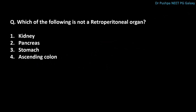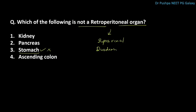Which of the following is not a retroperitoneal organ? The correct answer is the stomach. Retroperitoneal organs include the kidney, pancreas, ascending colon, suprarenal gland, duodenum (except a small area of the first and fourth parts), descending colon, inferior vena cava, and ureters.